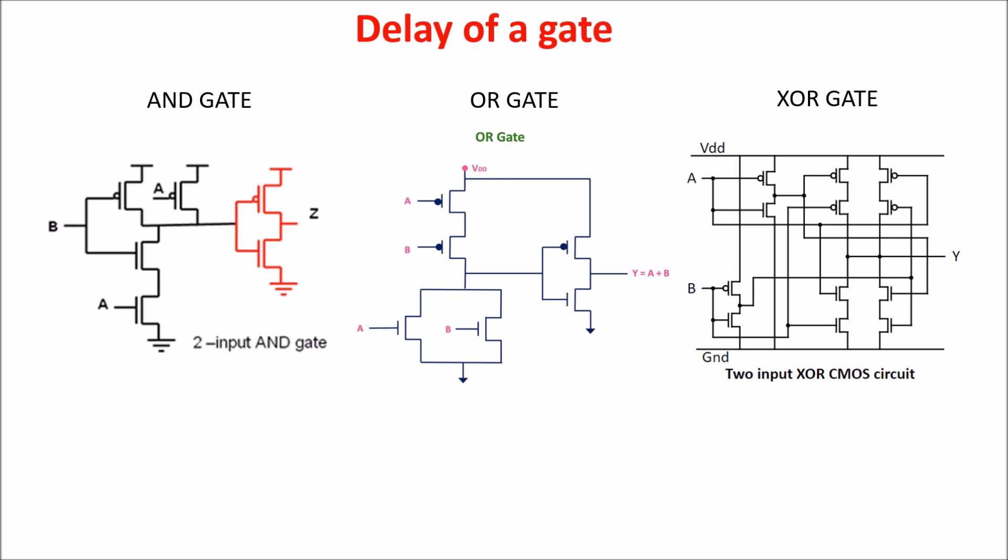However, the logic gate delays are not all the same. You can realize it directly from the circuit and the connection. The XOR gate is the slower gate among these three logic gates, and the AND gate is slightly faster than the OR gate. I leave you a link in the description about the logic gate delay.